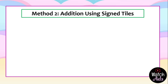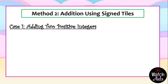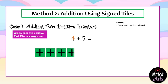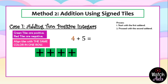Now let's have our second method: addition using signed tiles. We'll use the same cases from before but a different method, and we will end up with the same answers. It's up to you which method is easier to use. Remember: green tiles are positive and red tiles are negative. For the first case, we start with the first addend, which is four. We put four green tiles as positive in one row, aligning tiles with the same color together. Then we proceed to the second addend, which is five.